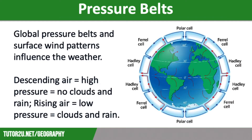Global pressure belts and surface wind patterns influence the weather, and in particular precipitation. Descending air means high pressure, so there are no clouds and rain, whereas rising air means low pressure, which results in plenty of clouds and rain.